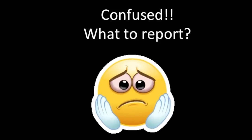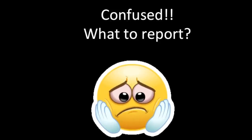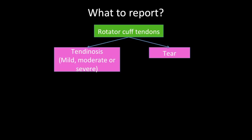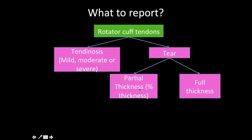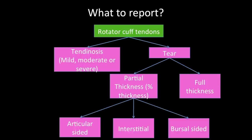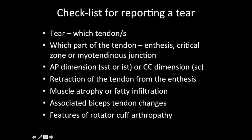To summarize the reporting checklist: for each rotator cuff tendon, determine if there is tendinosis or a tear. For tendinosis, grade as mild, moderate, or severe. For tears, specify partial or full thickness. For partial thickness tears, mention the percentage thickness involved and whether it is articular sided, bursal sided, or interstitial. Use the full checklist of findings — location, dimensions, retraction, muscle atrophy, fatty infiltration, and biceps status — while describing any tear.